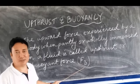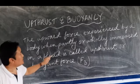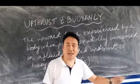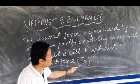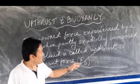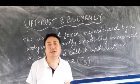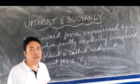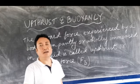Since upthrust is a force, its SI unit and CGS unit are the same as those of force. The CGS unit of upthrust is dyne, and the SI unit of upthrust is Newton. For gravitational units, the SI gravitational unit is kilogram-force and the CGS gravitational unit is gram-force.